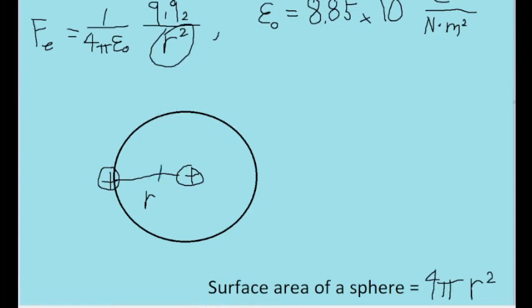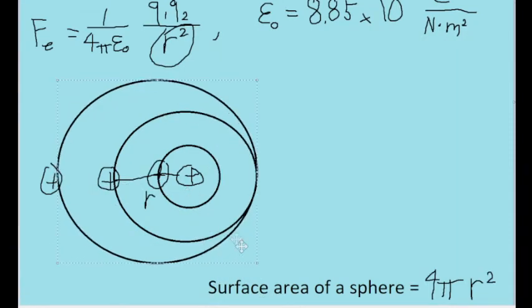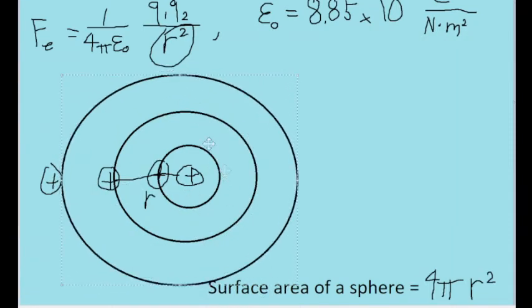If we bring the charge closer, then we'll have a new sphere that is valid for a new force at that point in time. And now there are fewer points at which the force can be equal. If we move the charge further away, then the sphere of points at which the force will be the same is now a little larger, again, surrounding one of the charges.